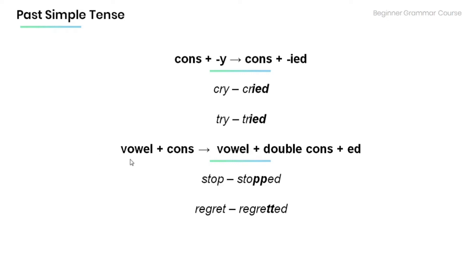When a word ends with a vowel and a consonant, we keep the vowel, double the consonant, and add -ed. As in the examples: stop → stopped, regret → regretted.